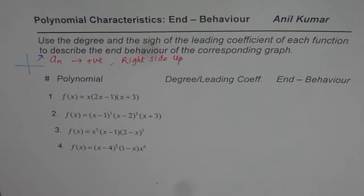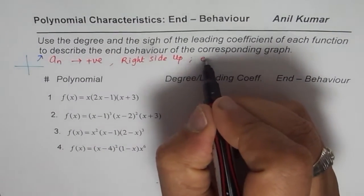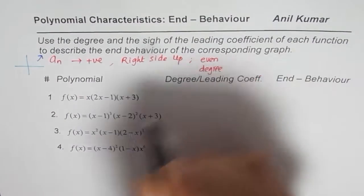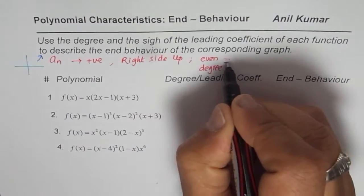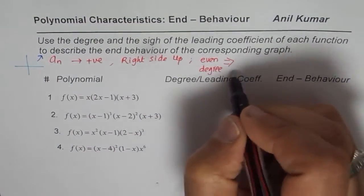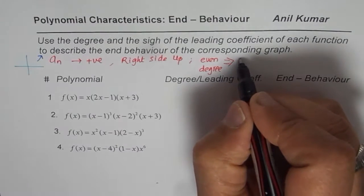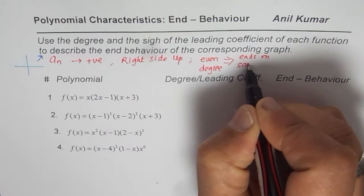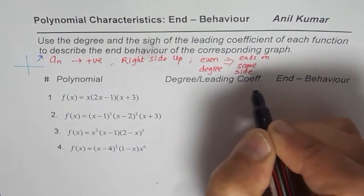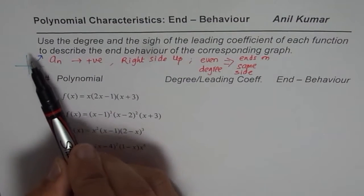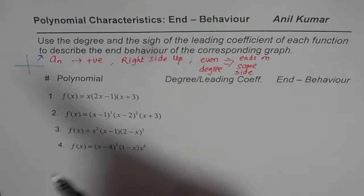If we have an even degree function, both ends are on the same side — we say the ends are on the same side. So if it is even and the right side is up, then the left will also be up.